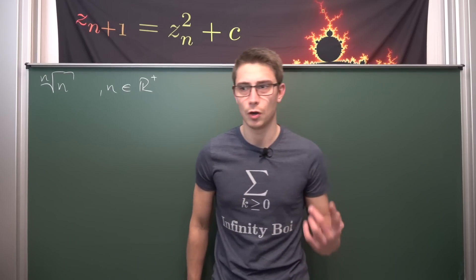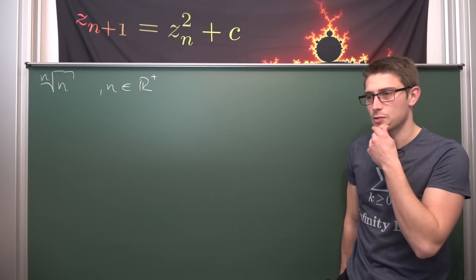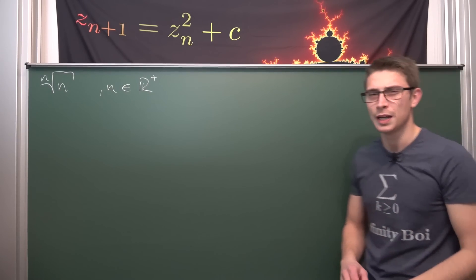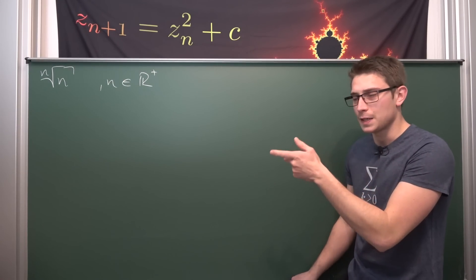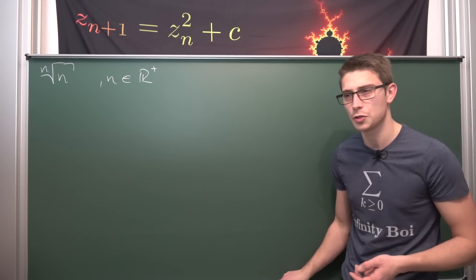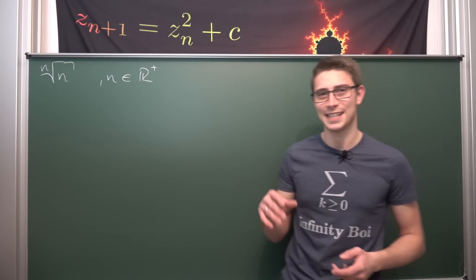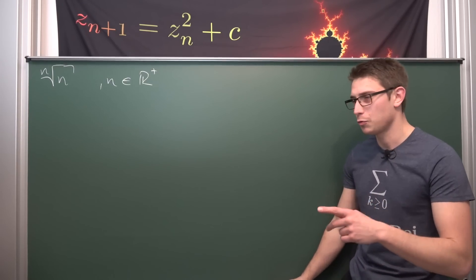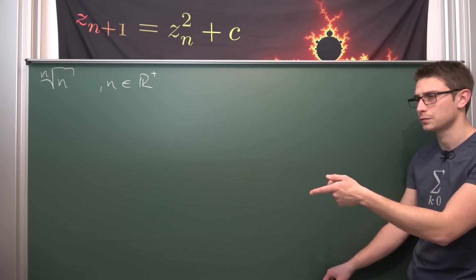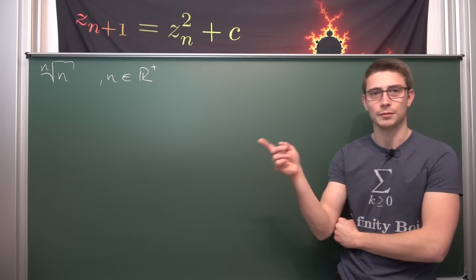If we take a look at the 1st root of 1, which is just 1 to the 1 over 1 power, this is 1. Then the square root of 2 is around 1.41. Then the cube root of 3 is pretty close to the square root of 2. The 4th root of 4 is still pretty close. But the 5th root of 5 is decreasing, the 6th root of 6 even more so, and the 10th root of 10 is even smaller.